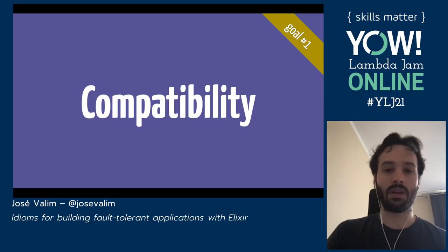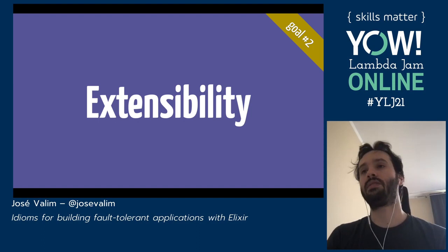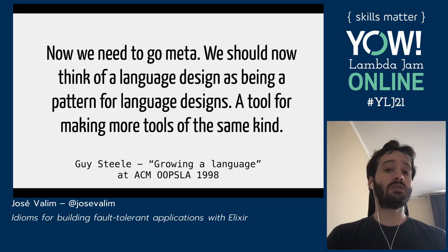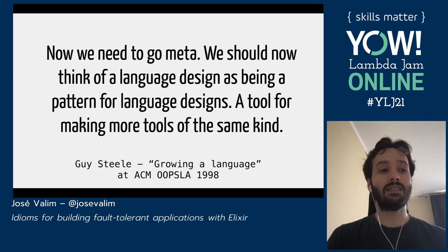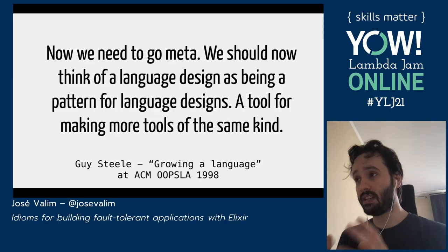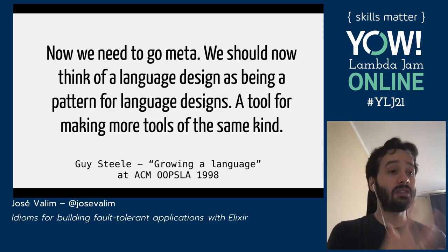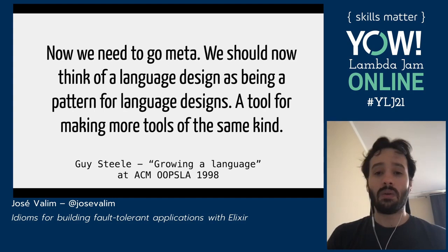Goal number two is extensibility. I love this quote from Guy Steele at the end of Growing a Language, where he says: now we need to go meta. We should now think of a language design as being a pattern for language designs, a tool for making more tools of the same kind. Today there are so many applications that it's impossible to design a language that excels at all of them. So what we need to do is design a language where we can extend it and bring it to new domains.